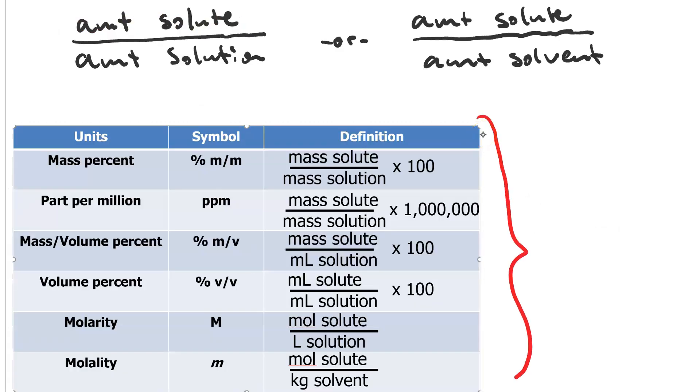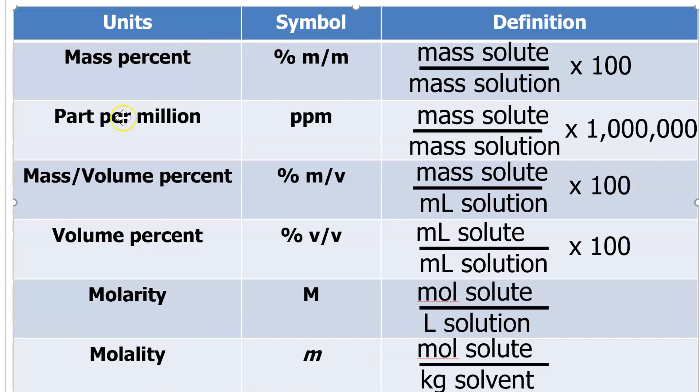There are multiple different units of concentration. Mass percent and parts per million both have mass of solute over mass of solution. For percent, you multiply by 100. For ppm, you multiply by a million. Ppm is useful for much smaller concentrations. Some things are present in such small concentrations that we use ppb, or parts per billion, where instead of multiplying by a million, you'd multiply by a billion.